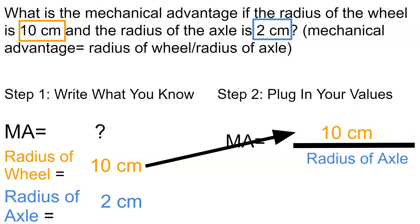And then the radius of the axle, we take that, we plug that in. So based on the formula, we see that this is a division problem. We are going to divide 10 by 2. So our mechanical advantage is 5.